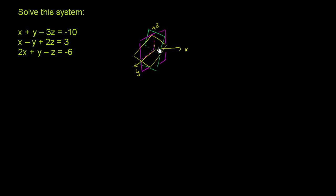I'm just doing this for visualization purposes. The intersection of this plane — the x, y, and z coordinates that would satisfy all three of these constraints, the way I drew them — would be right over here. So that's what we're looking for.